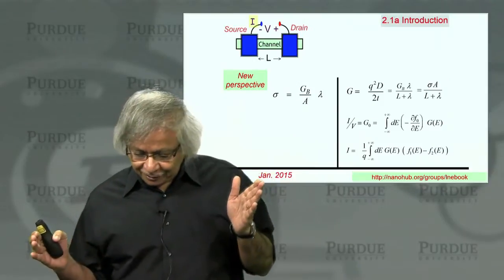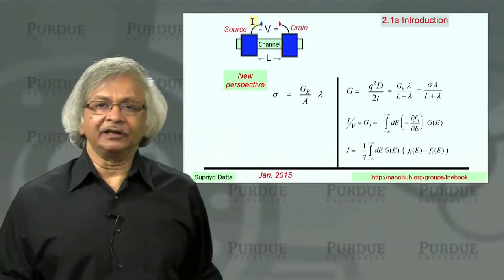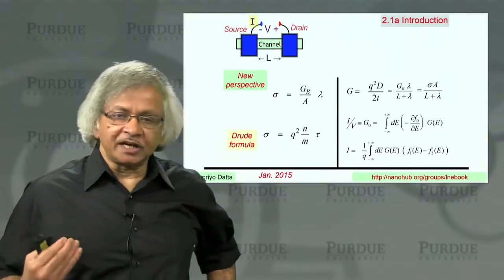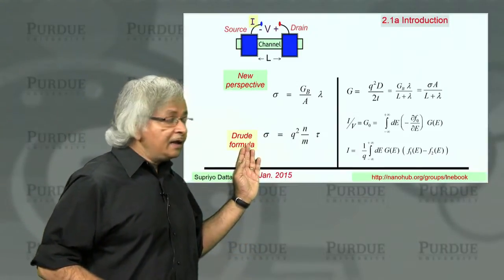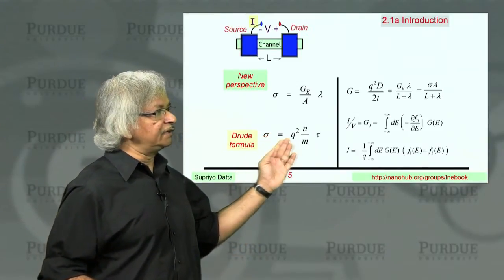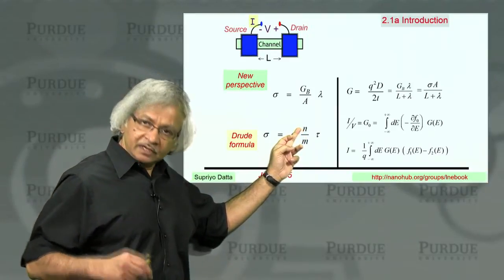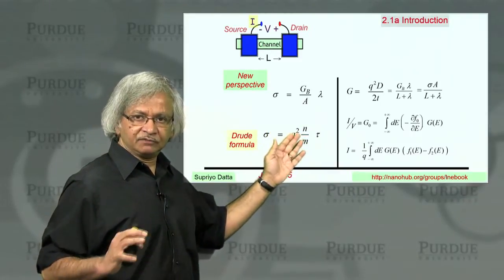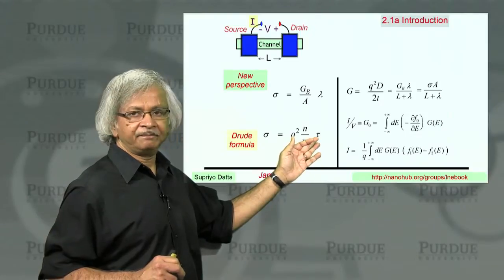We can contrast this with the old perspective, or the one that you have probably seen in freshman physics. Most textbooks would start with something like this, the Drude formula. Here you'll notice the conductivity depends on what you call the free electron density. And in Unit 1, we talked a little bit about the subtleties involved here. There's this effective mass and there's the mean free time.